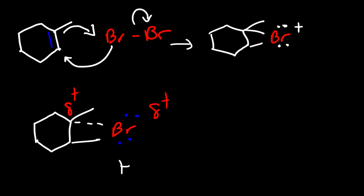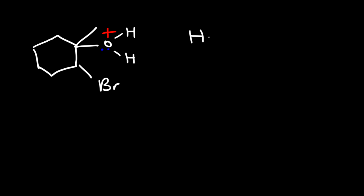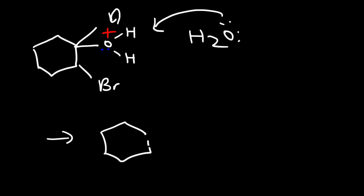When water attacks the carbon, it's not going to attack the secondary carbon — it's going to go for the tertiary carbon because it has considerable partial positive charge. That's why the oxygen goes on the more substituted carbon of the double bond, on the tertiary carbon, and the bromine atom will go on the secondary carbon. We then get an intermediate with an oxygen atom carrying a positive charge and one lone pair. In the final step, another water molecule takes off a hydrogen, giving us the halohydrin product with an OH group and a Br atom on the cycloalkane.